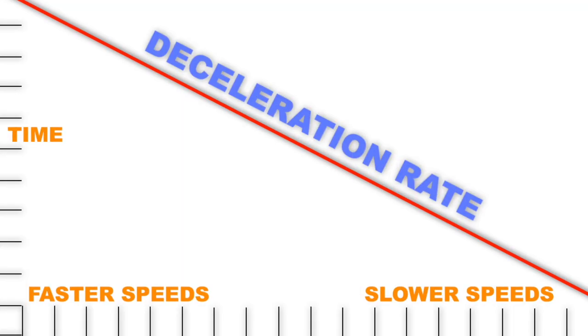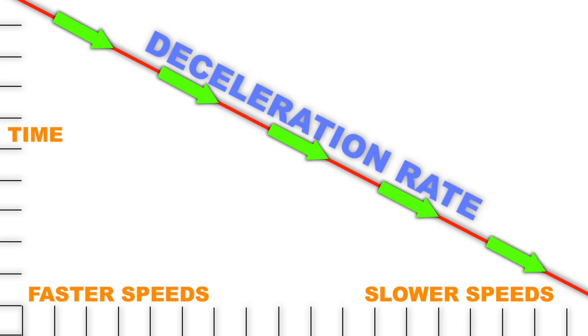I'm not going to pretend to be a physicist or anything like that. But based on everything I've read, when an object decelerates, the speed typically deteriorates at a linear rate. That basically means that the rate at which something slows down up here at this speed is the same rate that it slows down down here at this speed.